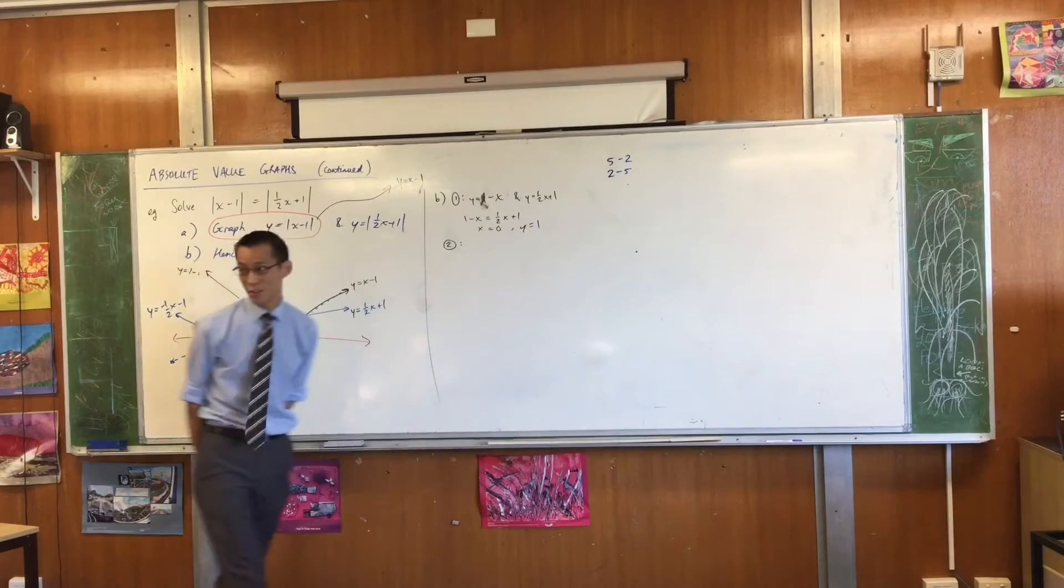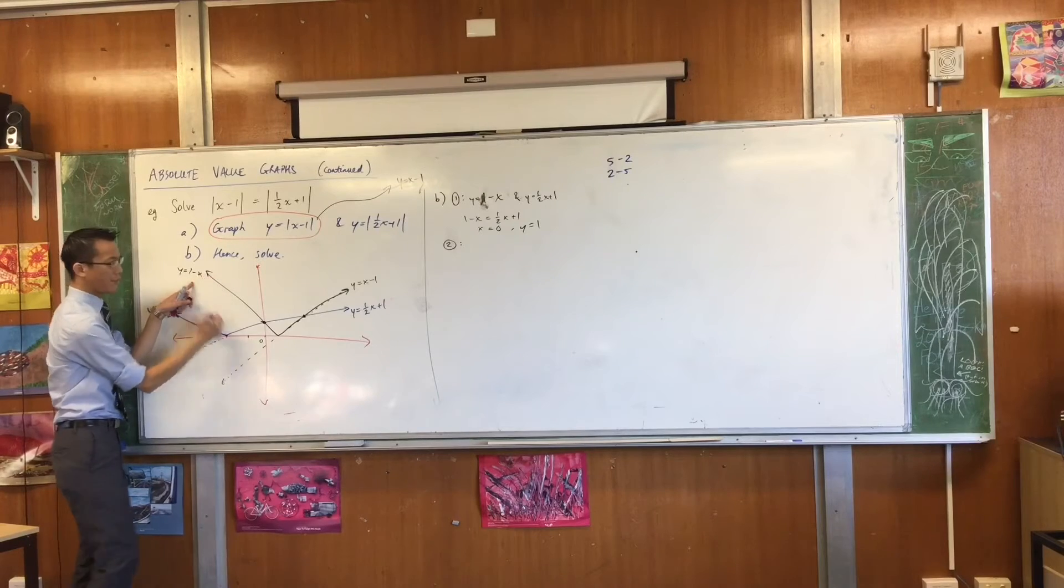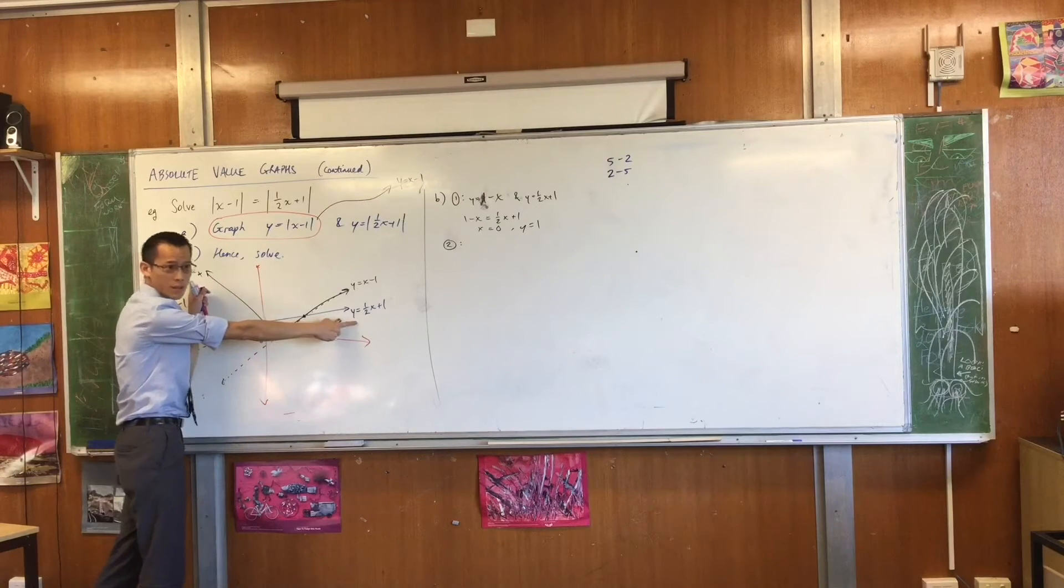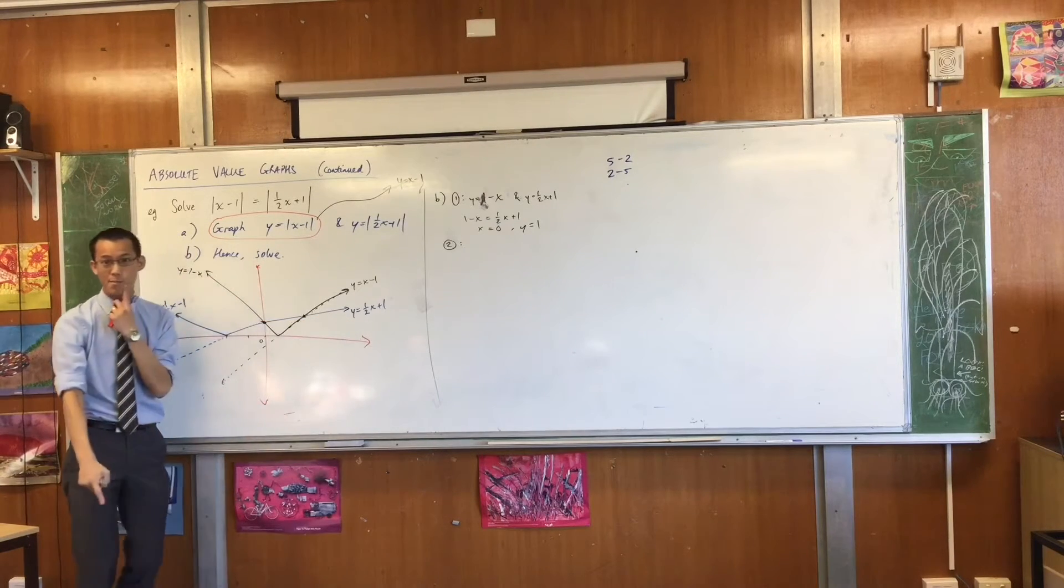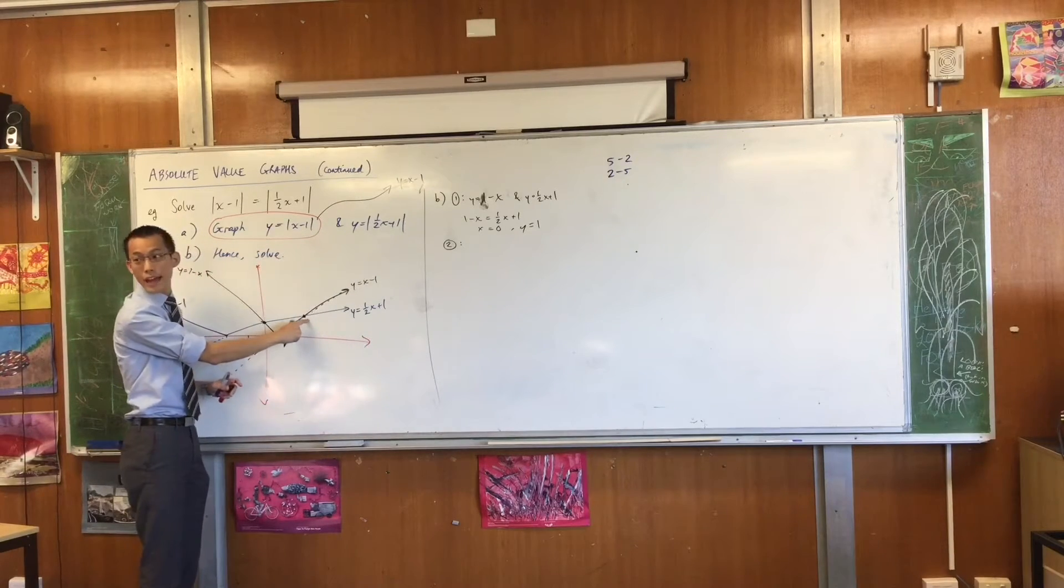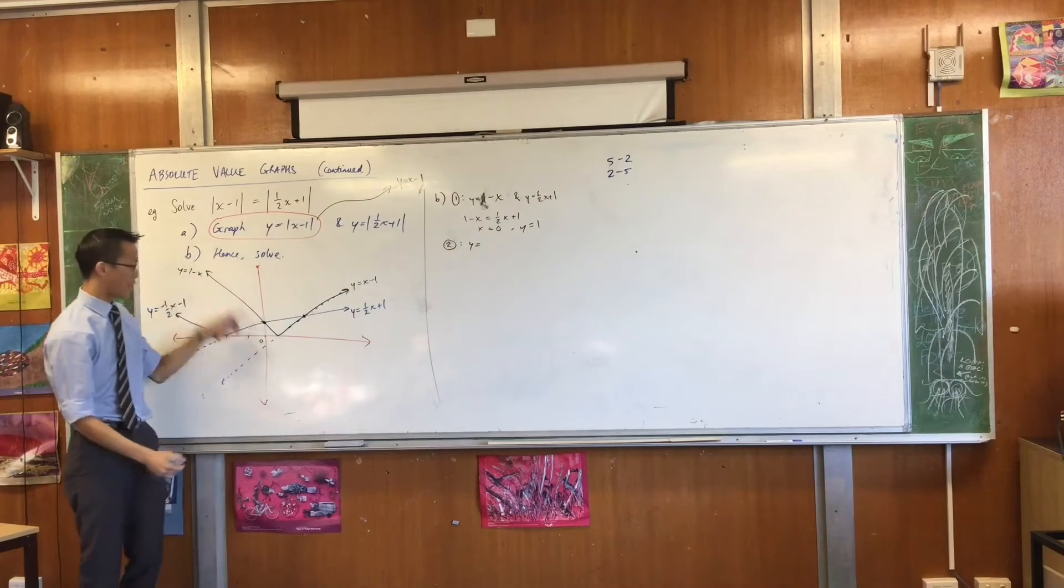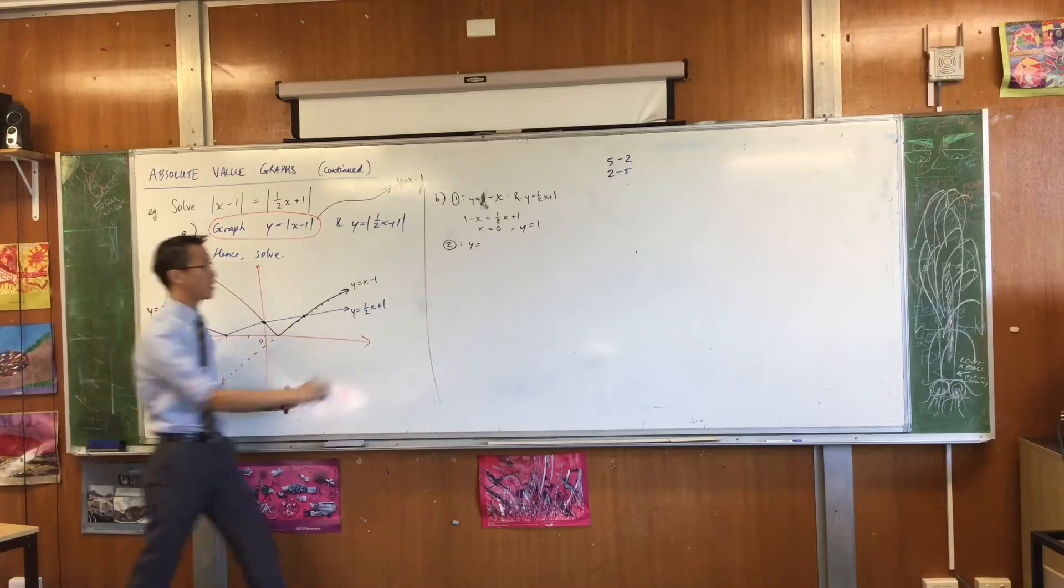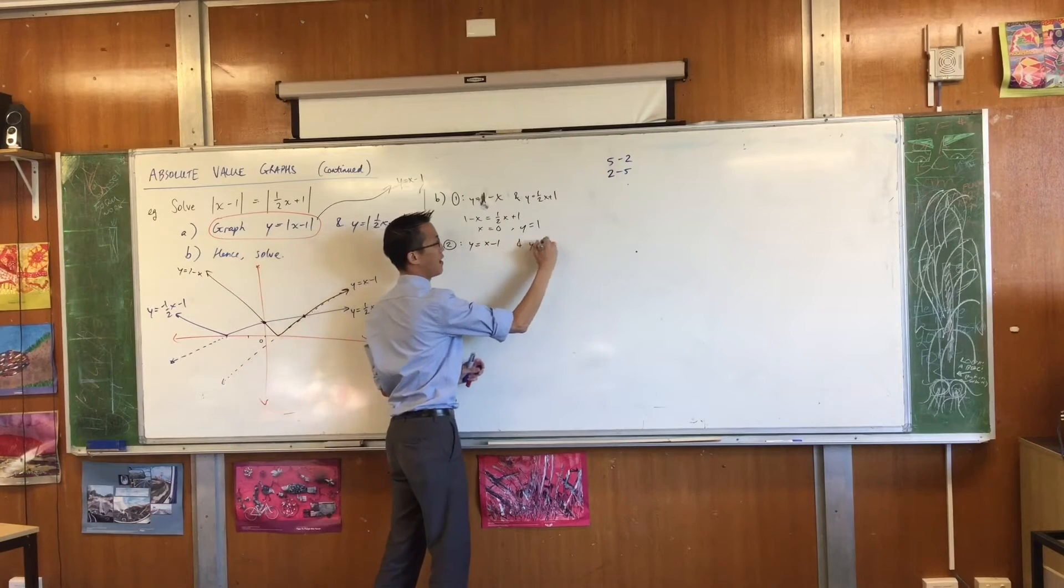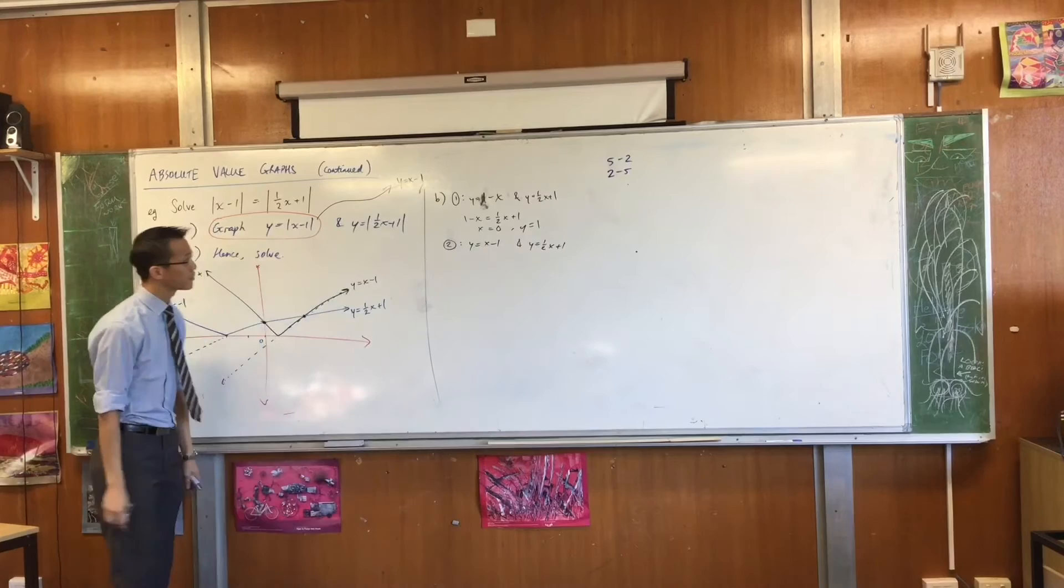So you can see off the graph, in fact, and you can see here as well, you're going to get a nice easy y coordinate of 1. Now, to find the other point of intersection, I used this line first with this one. Which ones am I going to combine this time? Yeah, it's these two. They're going to intersect here, wherever that happens to be.